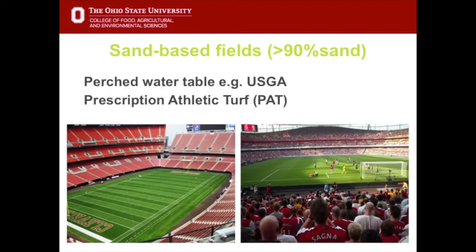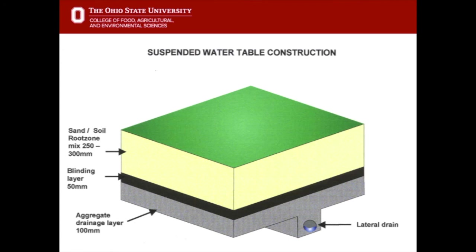The most expensive approach is to build a full sand field. The two most commonly constructed sand fields are the perched water table — a USGA recommendation — and the Prescription Athletic Turf, developed at Purdue by Dr. Bill Daniels. Professional and collegiate stadiums will have these sand-based fields. A perched water table construction has a lateral drain at the bottom, a layer of gravel running over the whole field, a blinding layer of coarse sand or grit on top of the gravel to stop root zone material migrating down into the gravel, and then 12 inches of root zone material on top — a very specific sand-soil mix of over 90% sand.